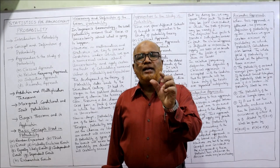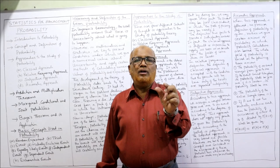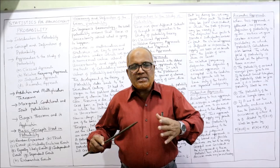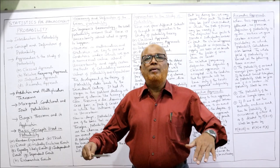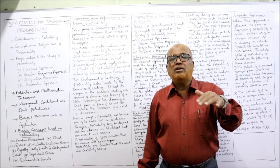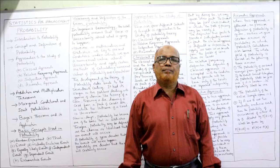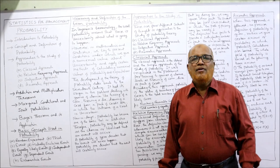Now, meaning and definition of probability. Probability is a word very frequently used in our common conversation. Whenever there is uncertainty about the happening of an event, we use words like 'probably,' 'possibly,' or 'likely.' For example: 'probably it may rain tonight,' 'probably a team will win the match,' or 'probably Mr. X may not take the class.' In all these sentences there is an element of uncertainty — the event may or may not happen.